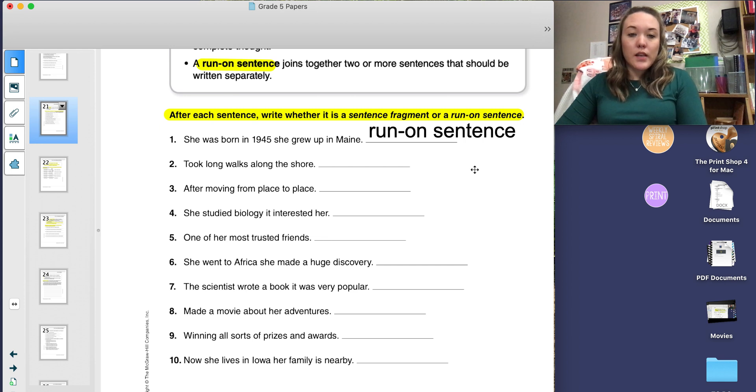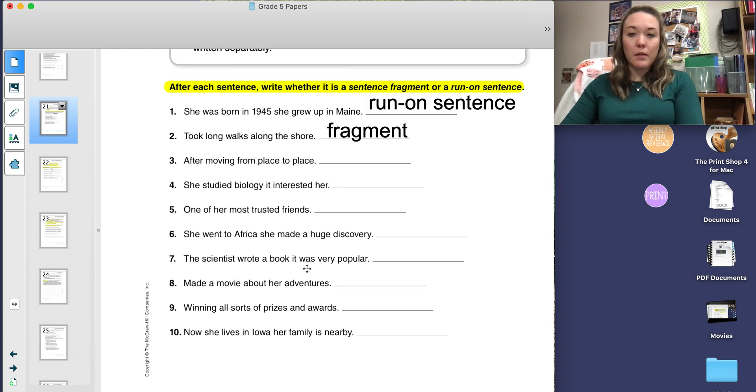Number two says, took long walks along the shore. I noticed that this is missing a subject. Who took long walks along the shore? Because it's missing a subject, the sentence is a fragment. You will finish this page with the same directions for three through ten.